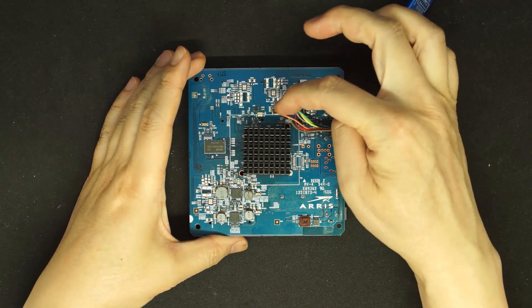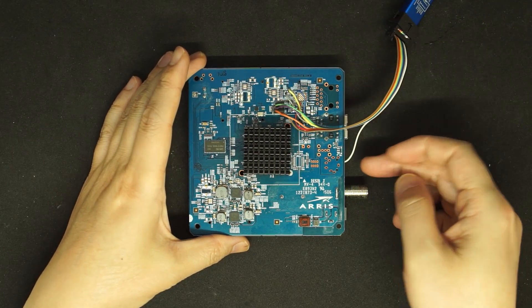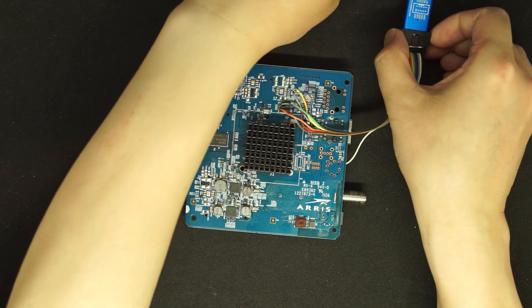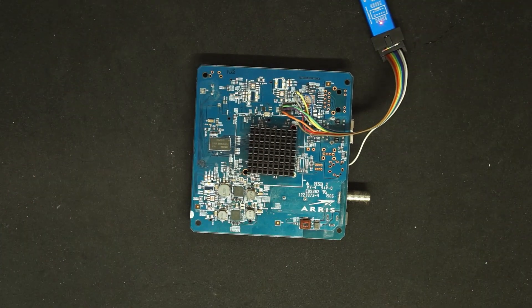So this is the U-Link NT. I soldered four signal wires to the chip and the power on the other side. Let's connect it to the USB.